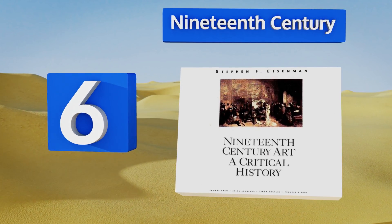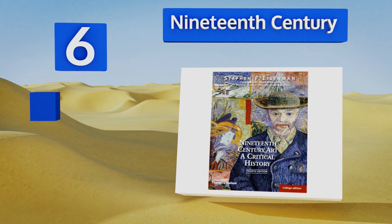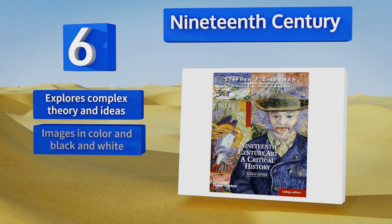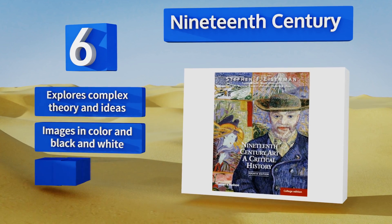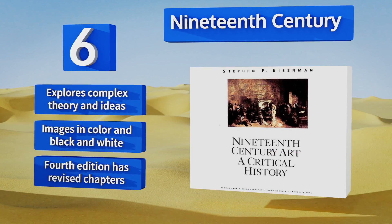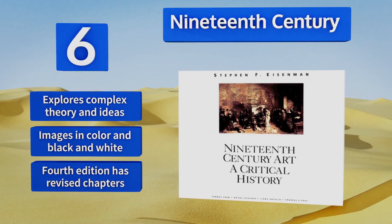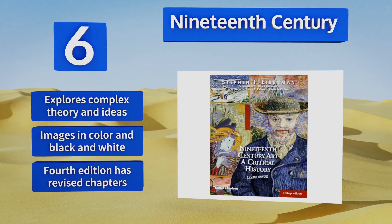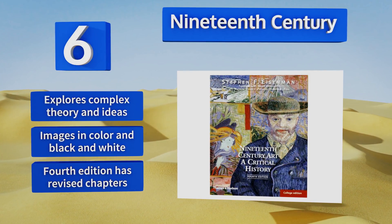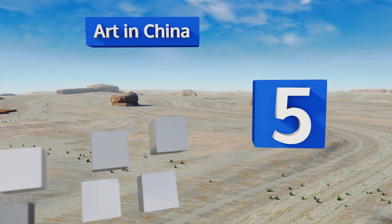Moving up our list to number six, intended for college students dabbling or majoring in the subject, 19th Century delves into painting, sculpture, and photography during that period. Those looking to develop an up-to-date critical imagination and an appreciation of canonized works will also enjoy it. It explores complex theory and ideas, the images are in both color and black and white, and this fourth edition has revised chapters.